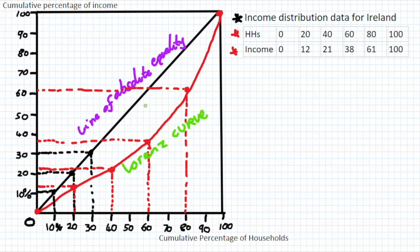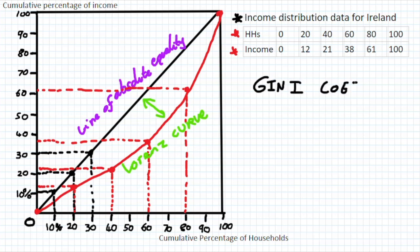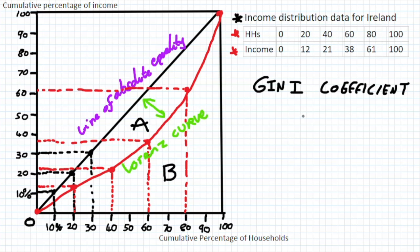The Lorenz curve for Ireland is shown as the red line, based on income distribution data. You can see there is a gap between the line of absolute equality and the Lorenz curve — the greater this gap, the greater the level of income inequality. We can measure this with the Gini coefficient. The formula uses area A — between the equality line and the Lorenz curve — divided by area A plus area B, where B is the remaining area. The result falls between 0 (perfect equality) and 1 (perfect inequality).